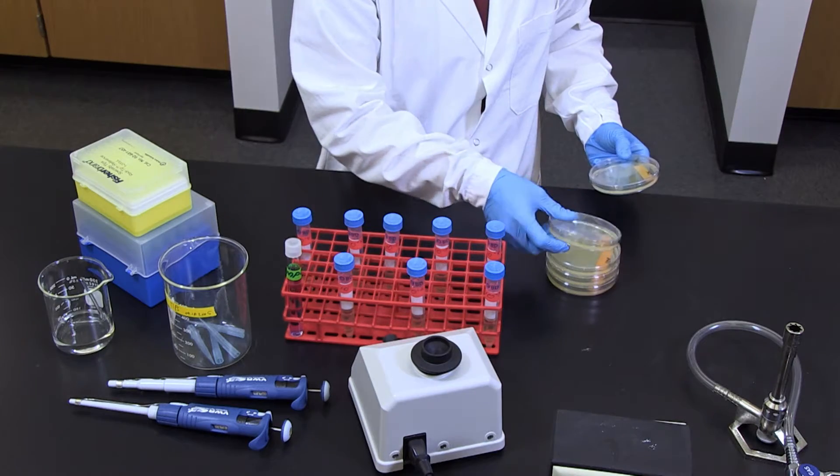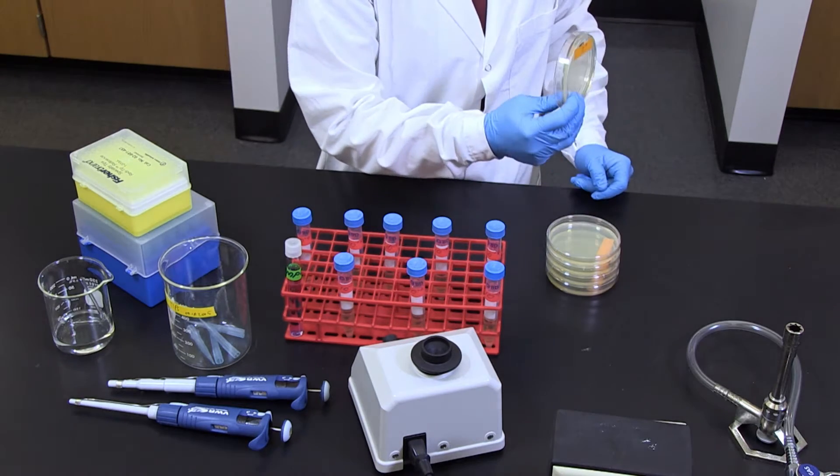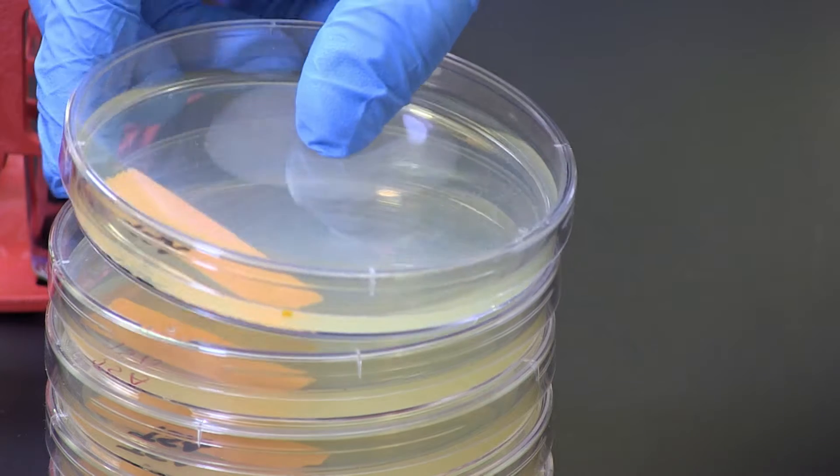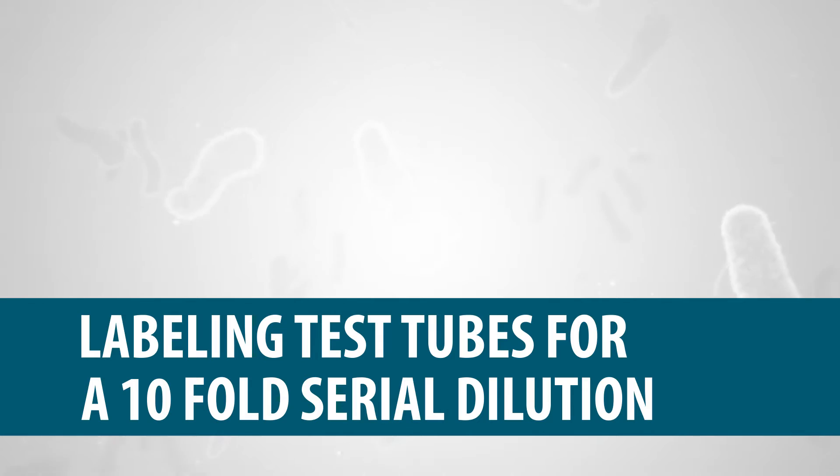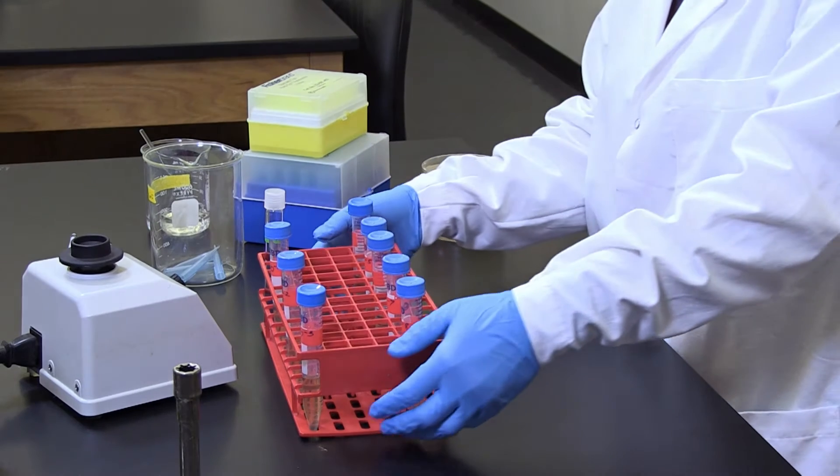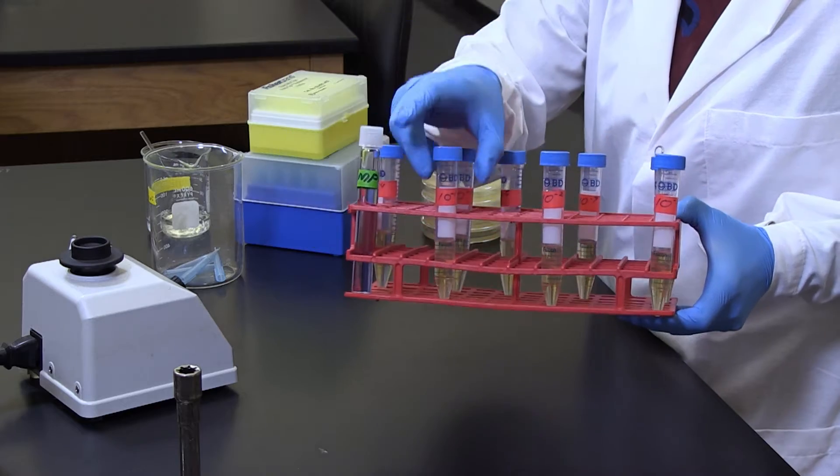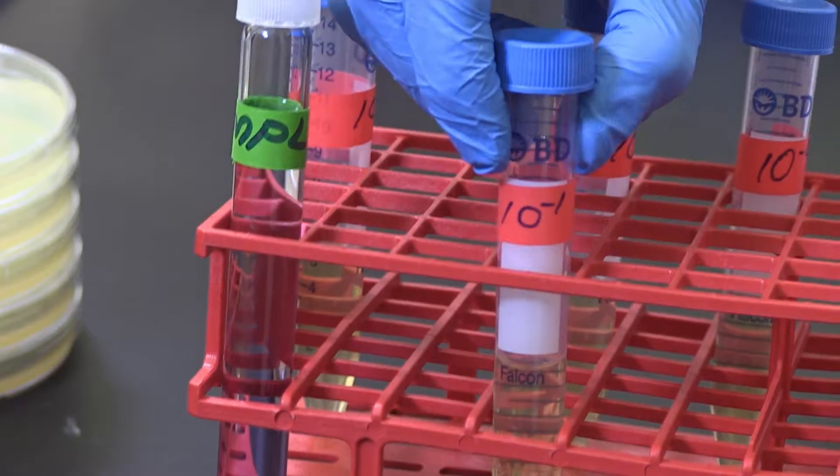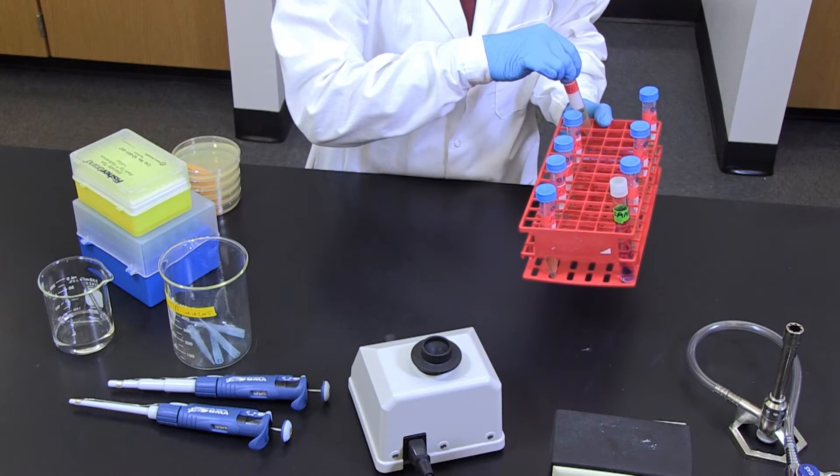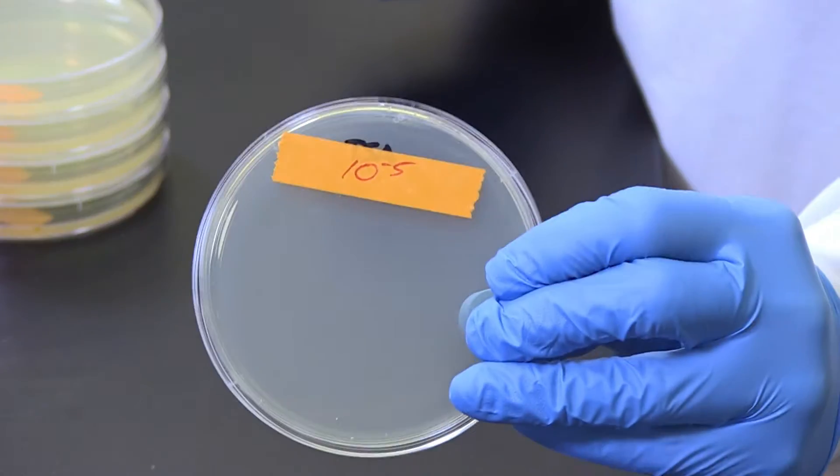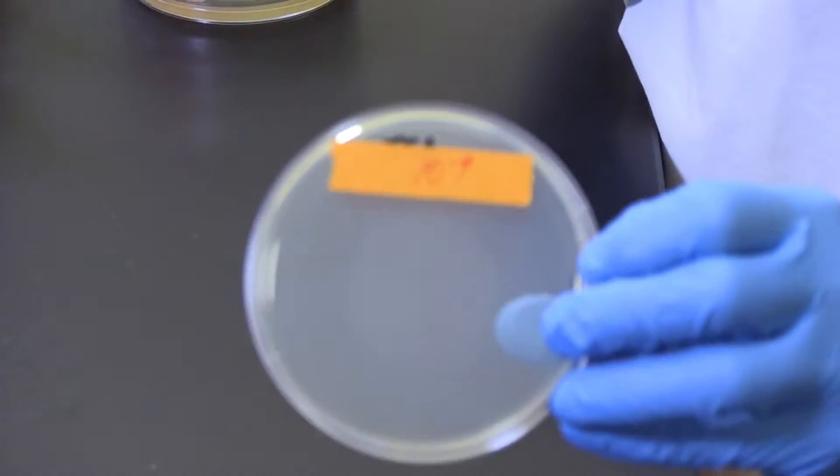Bacteria are serially diluted and plated onto agar plates using aseptic technique. First, label eight 4.5 milliliter broth test tubes from ten negative one to ten negative eight, and five agar plates from ten negative five to ten negative nine.